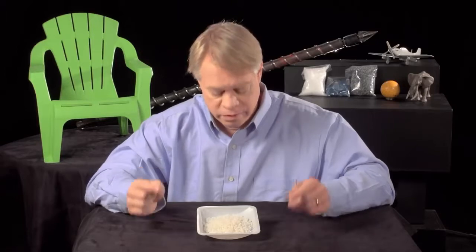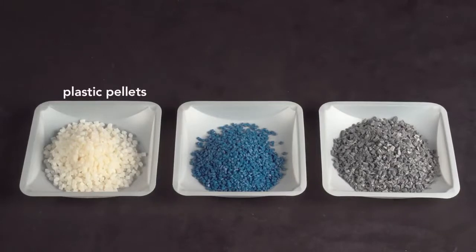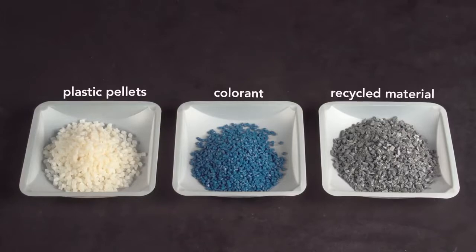All injection molded objects start with these plastic pellets, which are a few millimeters in diameter. They can be mixed with small amounts of pigment, called colorant, or with up to 15% recycled material then fed into the injection molding machine.